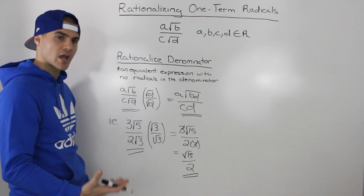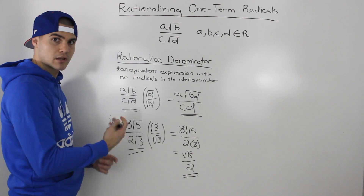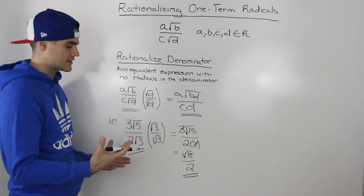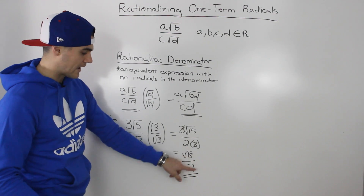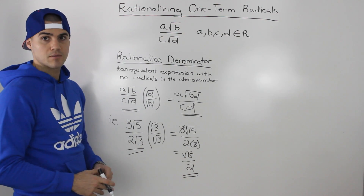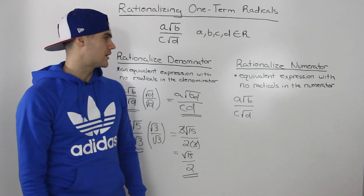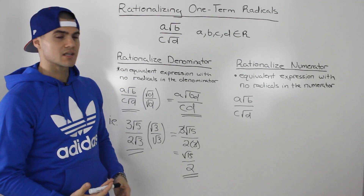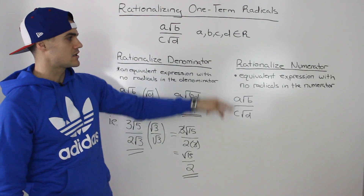You can always check your answer by taking the original expression, plugging it into your calculator to get a decimal number, then plugging in your answer and making sure you get the same decimal amount. Now, more often than not you'll be asked to rationalize the denominator, but sometimes you'll also be asked to rationalize the numerator.